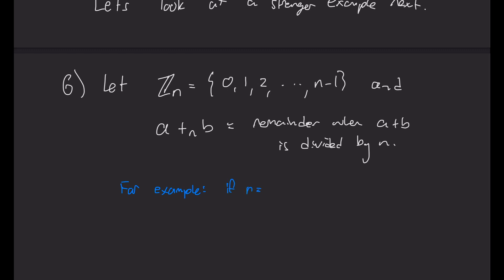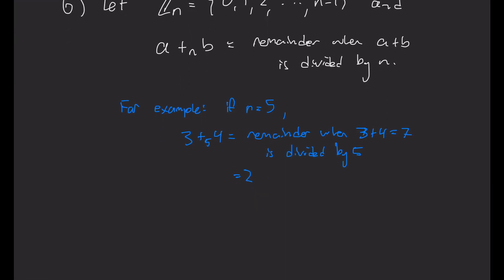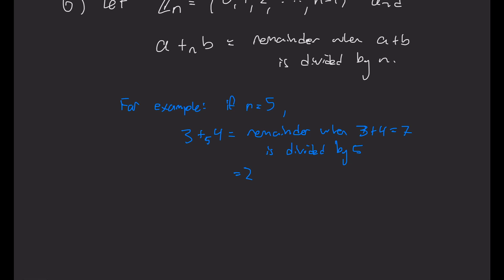So for example, if n is 5, and we look at 3 and 4, so 3 plus sub 5 of 4 is the remainder when 3 plus 4, which is 7, is divided by 5. So that has a remainder of 2 when I divide by 5. So in this arithmetic, 3 plus 4 is 2, which is a little strange. Or another nice example, 4 plus sub 5 of, 4 plus 1 sub 5 is 0.